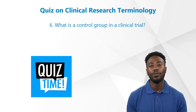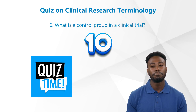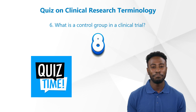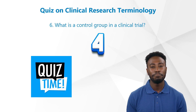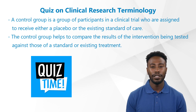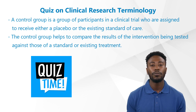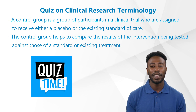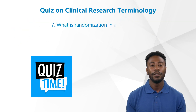Question 6: What is a control group in a clinical trial? A control group is a group of participants in a clinical trial who are assigned to receive either a placebo or the existing standard of care. The control group helps to compare the results of the intervention being tested against those of a standard or existing treatment.